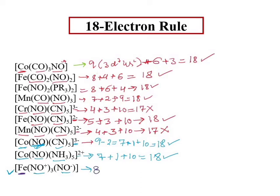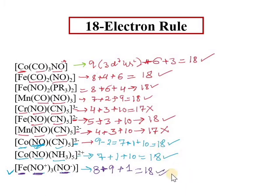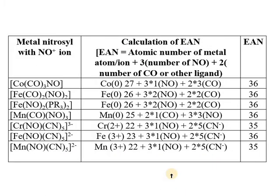When NO acts as NO+, it is a 3-electron donor, providing 9 electrons from 3 nitrosyls. When NO acts as NO-, it is a 1-electron donor. In both cases the total electron count reaches 18, meaning these nitrosyl complexes follow the 18-electron rule. Those nitrosyl complexes following the 18-electron rule or EAN rule are more stable compared to those which do not obey these rules.